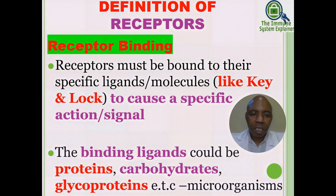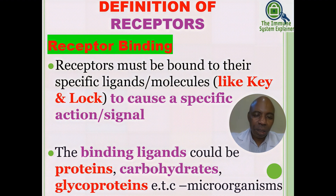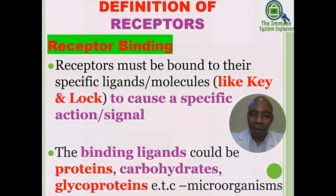Receptors must be bound to their specific ligands or molecules, and the manner in which they bind is like a key and lock, to cause a specific action or signal to be transduced into the cell. The binding ligands could be proteins, carbohydrates, glycoproteins, and so forth — these are structures presented by microorganisms, most of the time as pathogen-associated molecular patterns, or PAMPs.